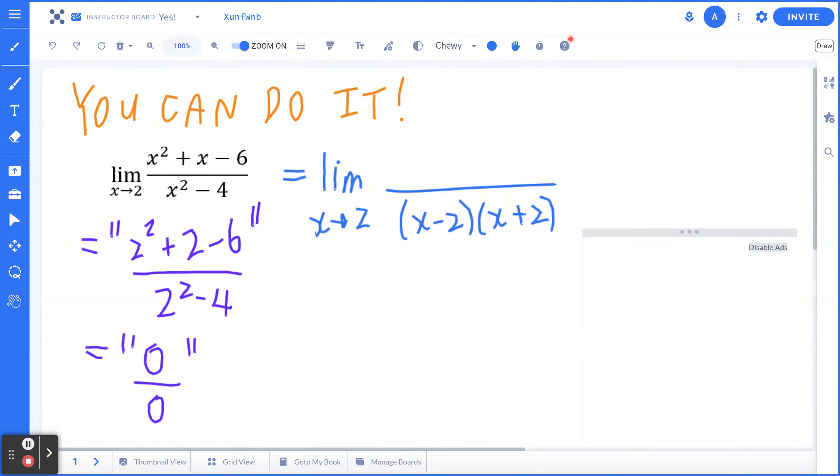If you look at the numerator, x squared plus x minus 6, this is what we call simple factoring, something that you've done in grade 10 math. So for example, you can think of this as x minus 2 times x plus 3.